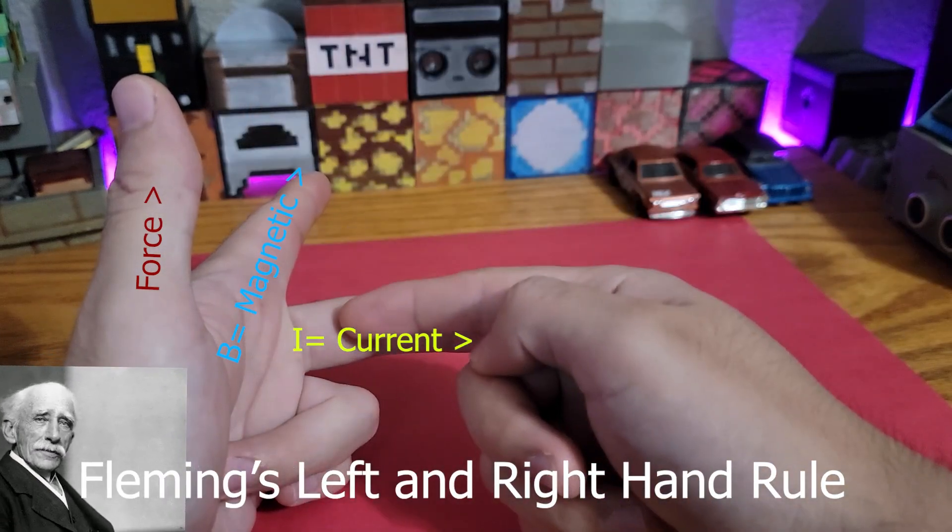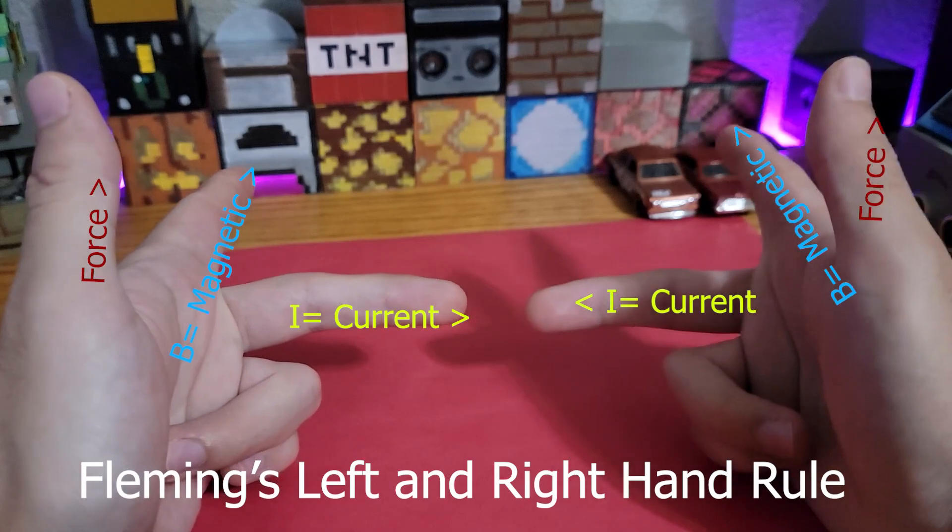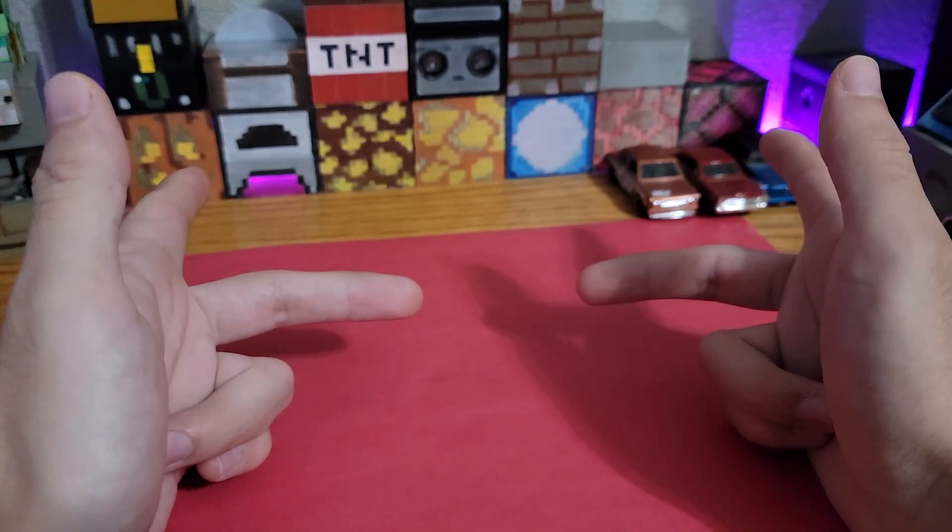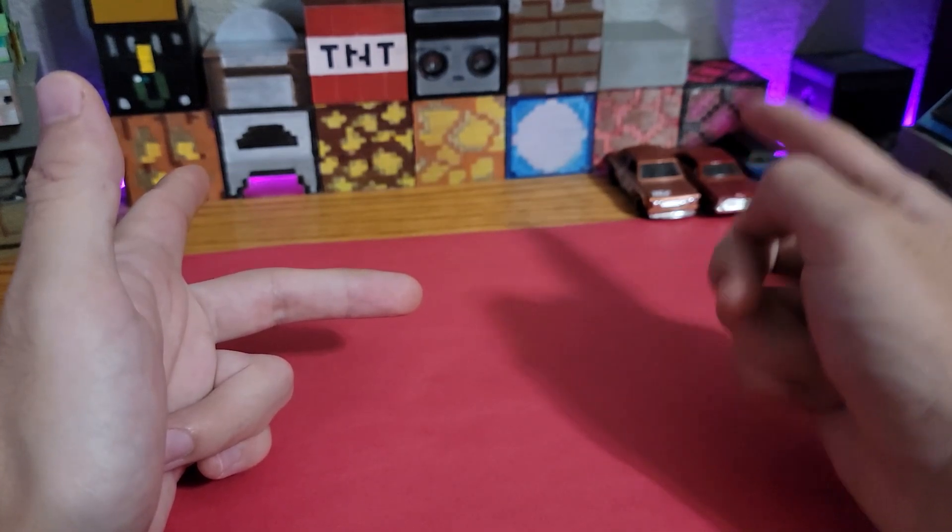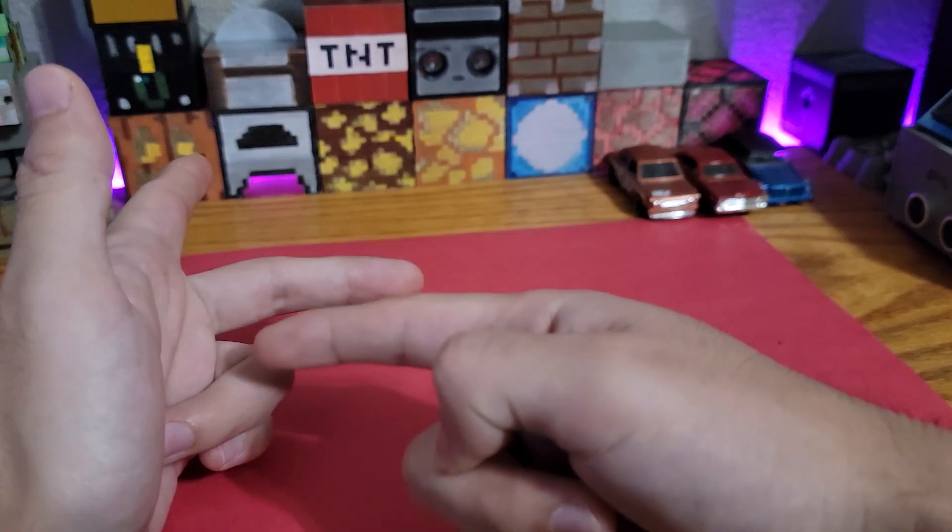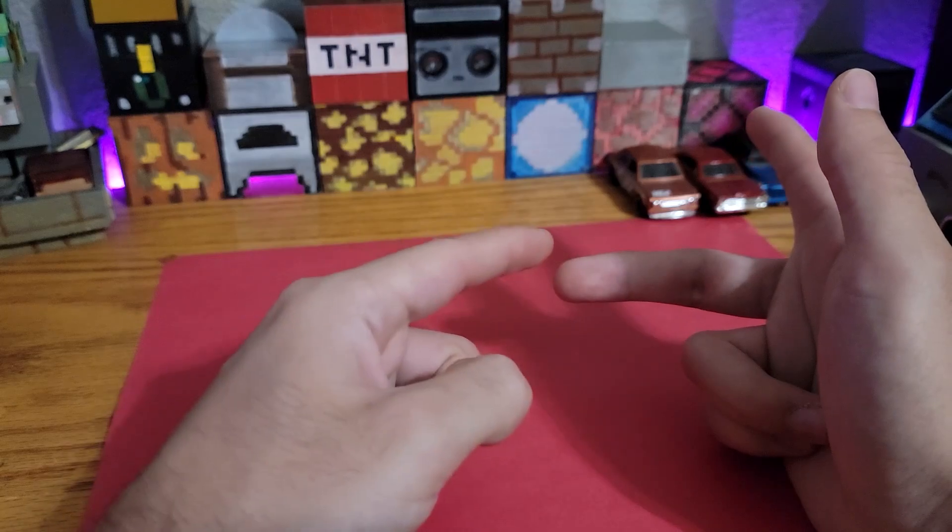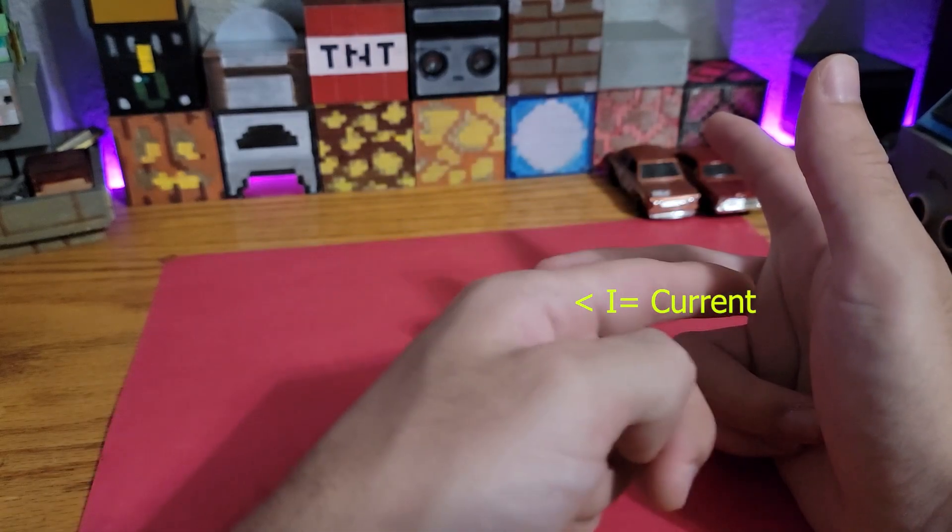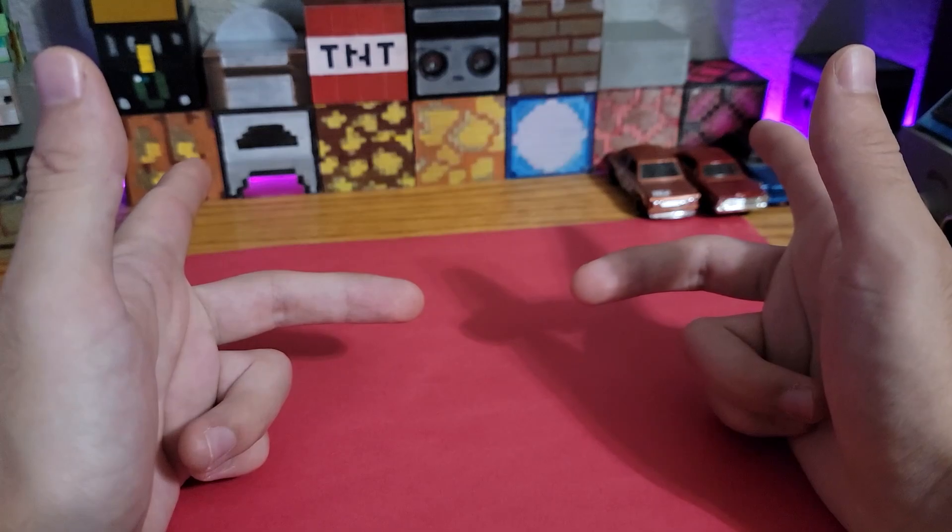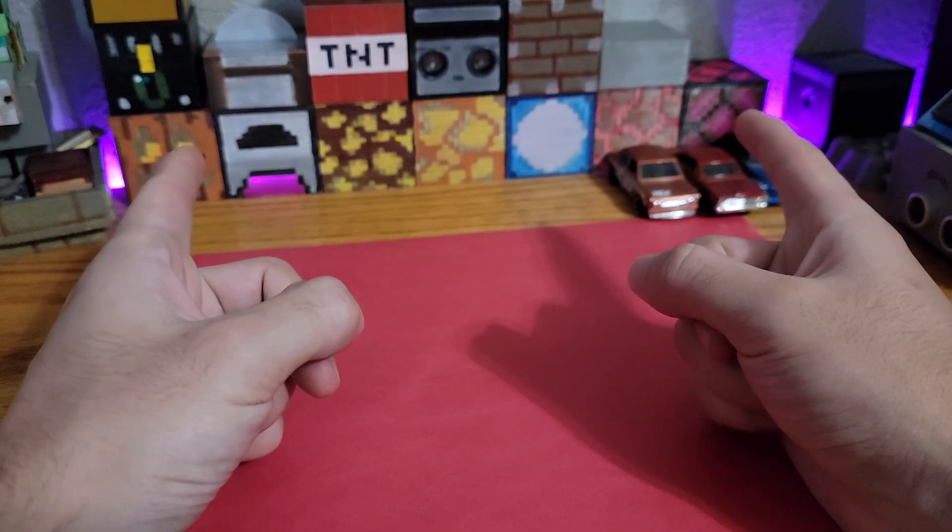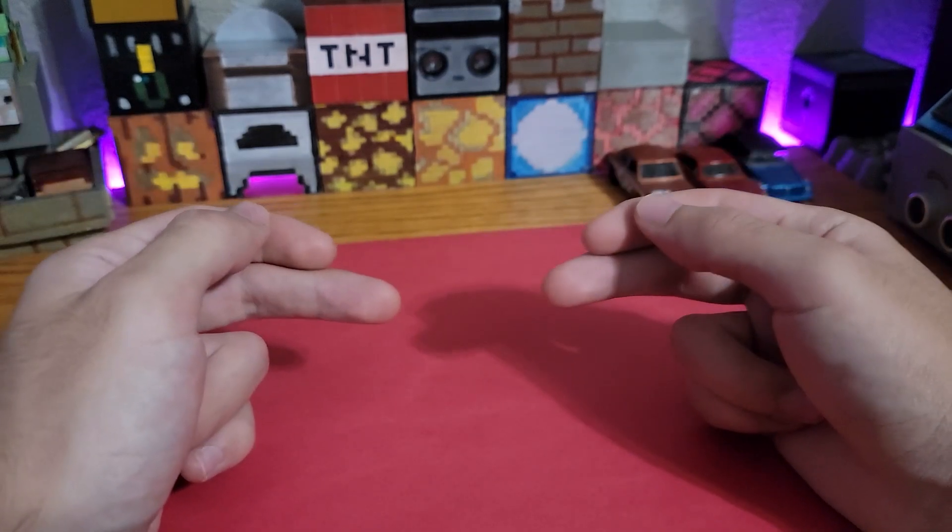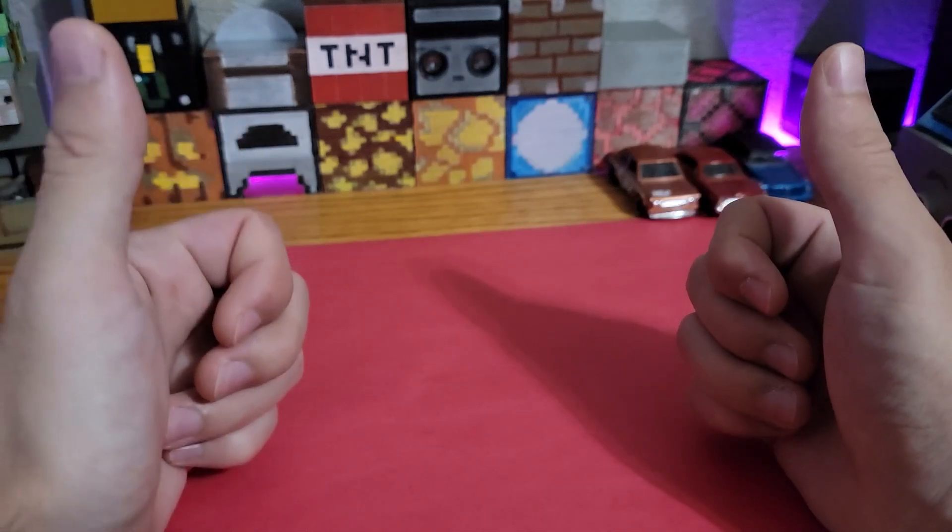Here we have Fleming's left hand rule and on the other hand we have Fleming's right hand rule. Both rules are based on the Lorentz force law, except that the left hand is for motors when a current is applied, and the right hand rule is based on generators when force is applied in order to induce a current. The forces on each finger stay constant: pointer finger remains magnetic force, the middle finger represents current, and the thumb represents the motion.